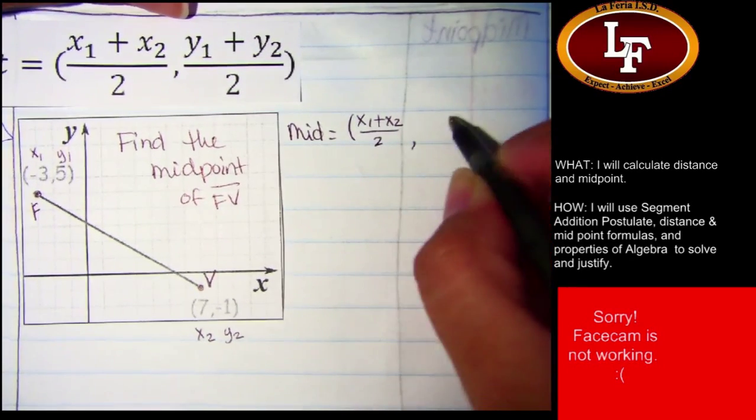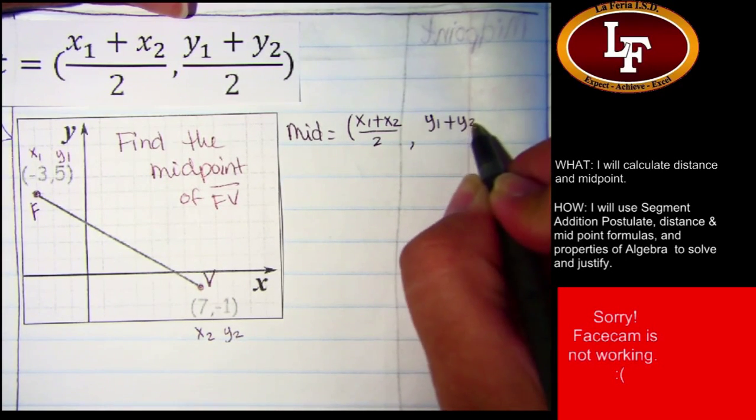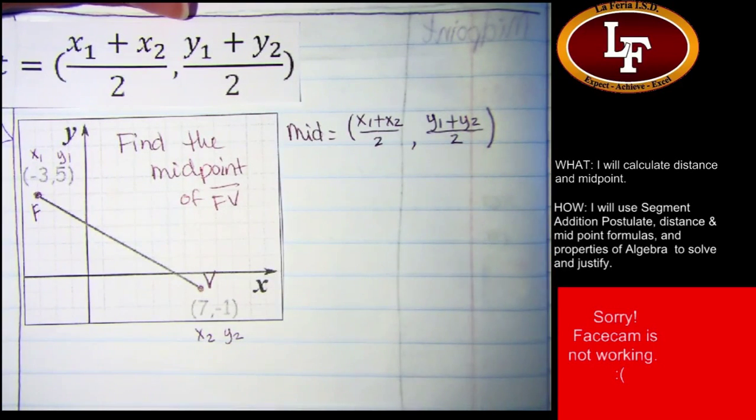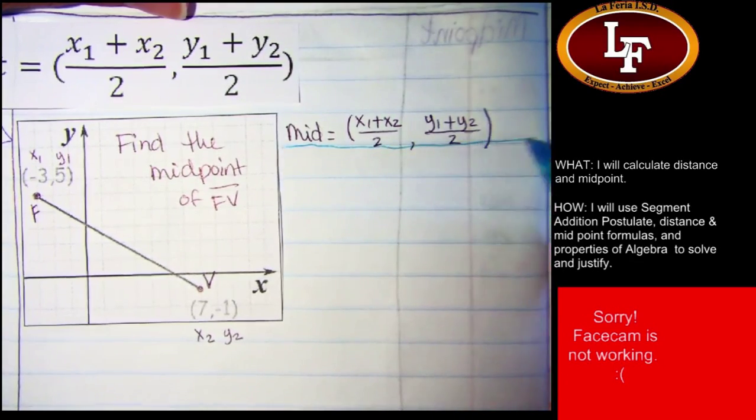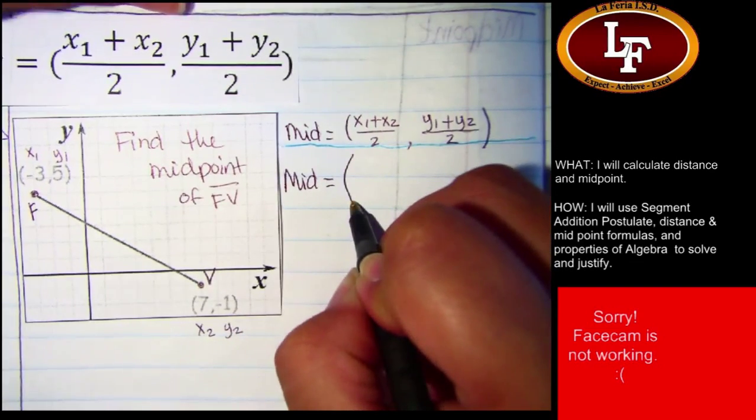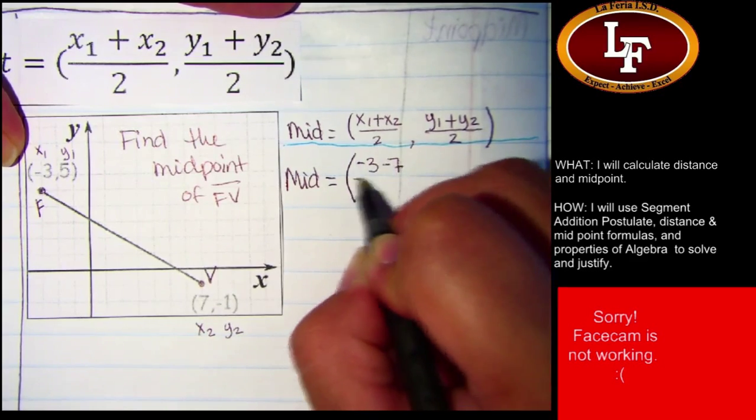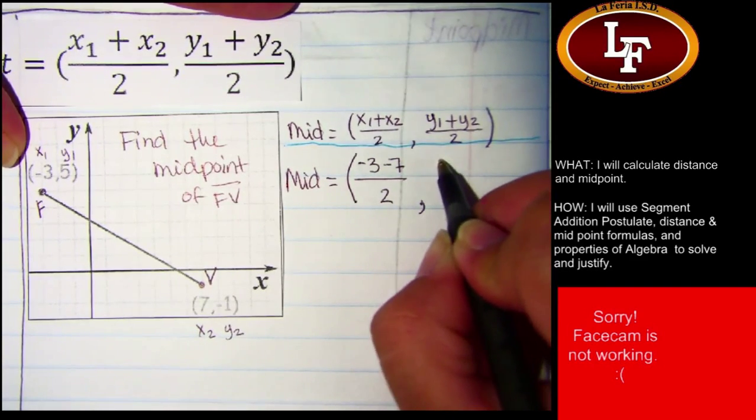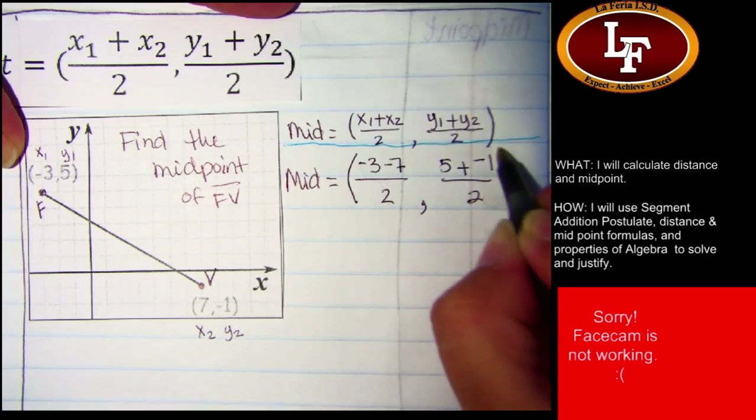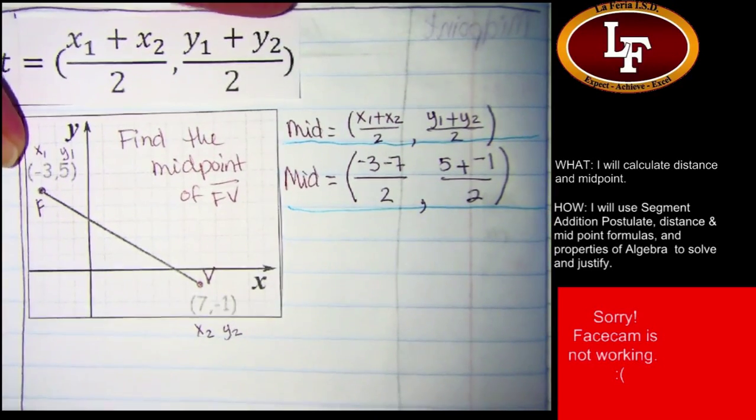All right I'm going to start off with the formula. My midpoint formula says x1 plus x2 all of that over 2 gives me the x coordinate comma y1 plus y2 over 2. All right I have my formula. I'm going to go ahead and start my substitutions. x1, x1 negative 3. x2 is 7. y1 is 5. y2 is negative 1. I'm done with my substitutions. Questions on where I got those numbers?